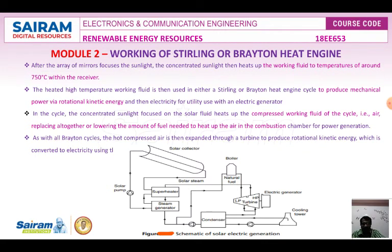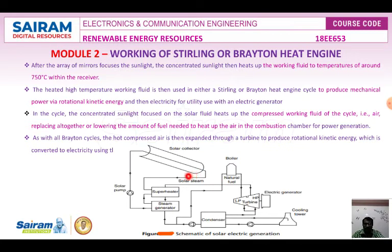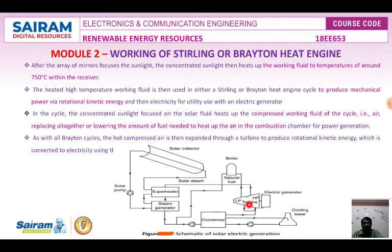Here is the solar electric generation schematic — this is the working principle of the Stirling or Brayton heat engine system. We have a collector which collects the sun rays and converts them into thermal energy. That thermal energy is stored in a thermal tank, then passed to a turbine which rotates and generates electricity.